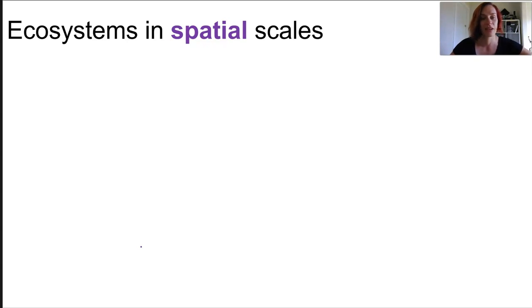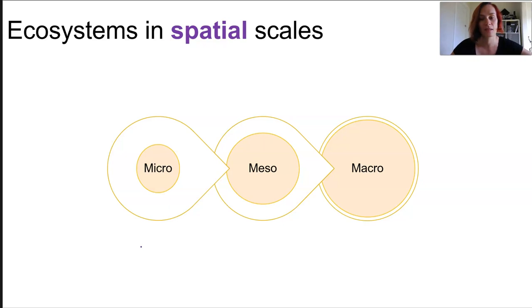If we look at ecosystems in a spatial perspective, we have to consider size. Ecosystems exist at a micro, meso, and macro level. Micro encompasses the local area and those biomes, meso is areas within continents, and macro are entire countries or continents.